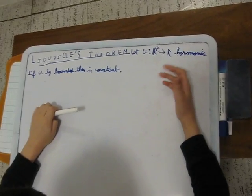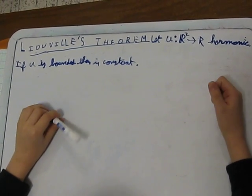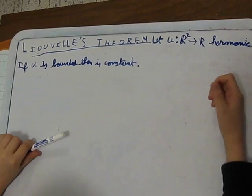It says, let U go from R² to R and let it be harmonic everywhere. So if U is bounded, then it is constant.